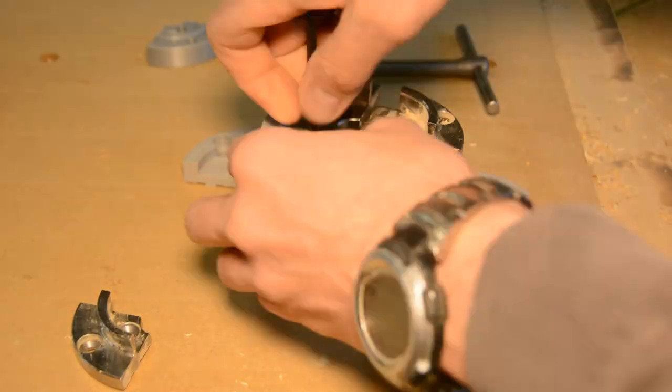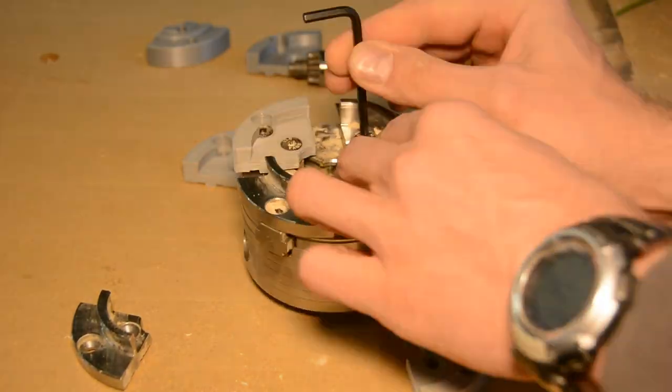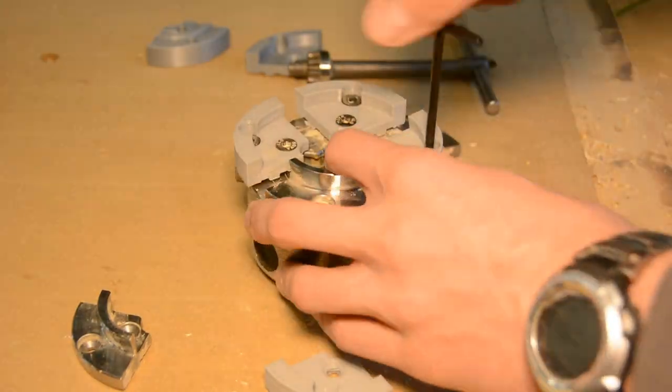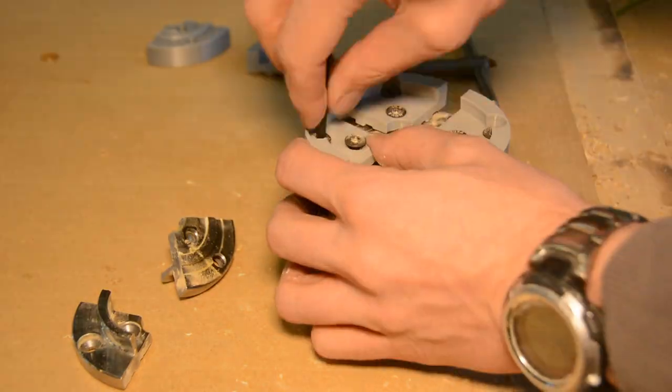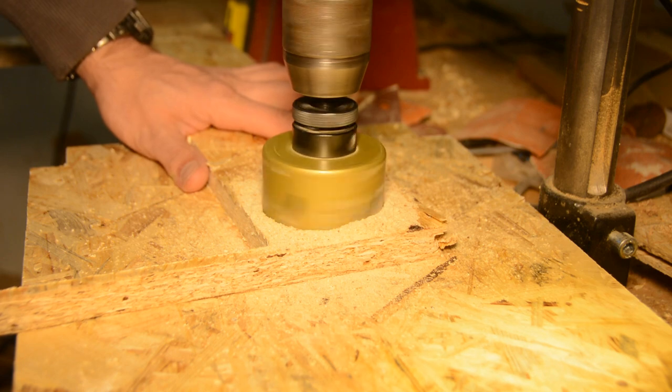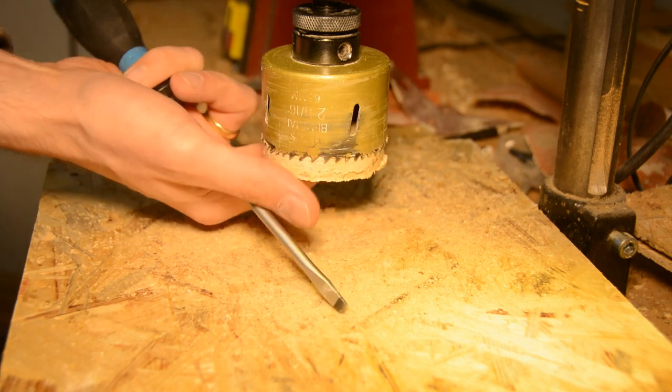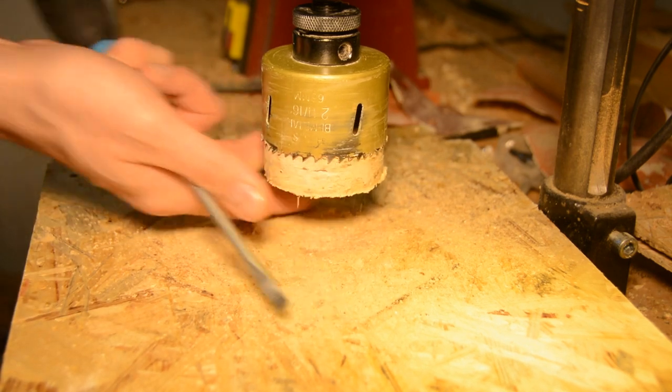Let's mount them on the chuck and see if they are going to explode. To hold the wood in the chuck in the first place, I make circular discs with a hole saw and glue these discs with hot glue on the wood.